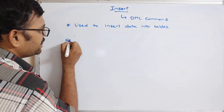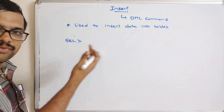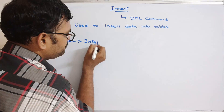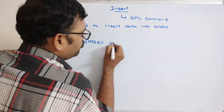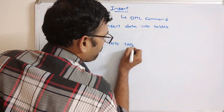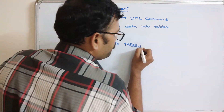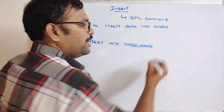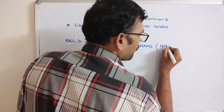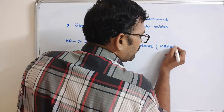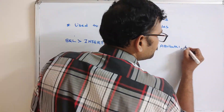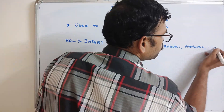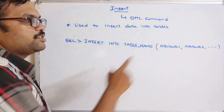So the syntax is: at the SQL prompt, use the command INSERT INTO, then the table name, followed by the attribute names in parentheses — attribute one, attribute two, and so on.